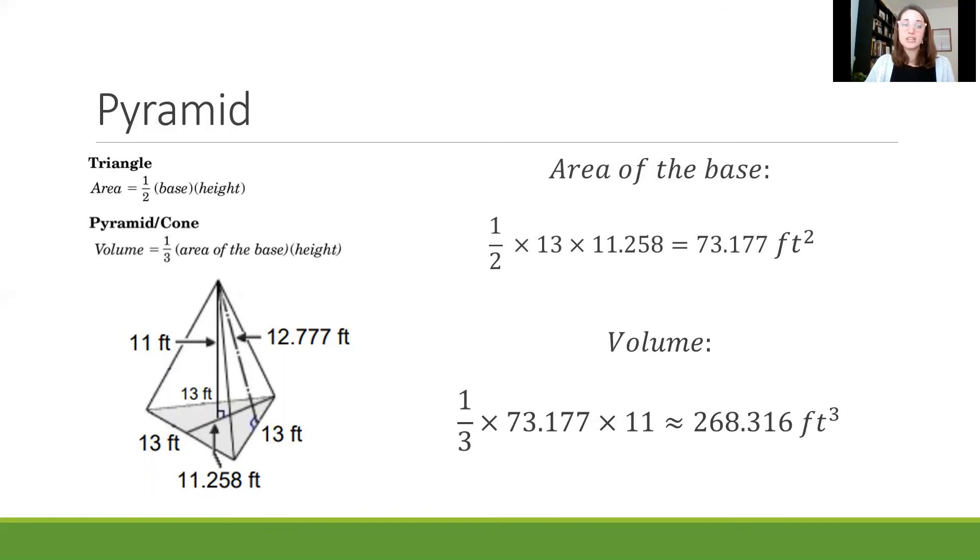So we'll take that 11 and then we'll multiply that in with our one third and our 73.177 and we get approximately 268.316, and I say approximately because I rounded that to the nearest thousandth value, and again we're going to include our measurement which is feet and we're going to include the cubed for volume.